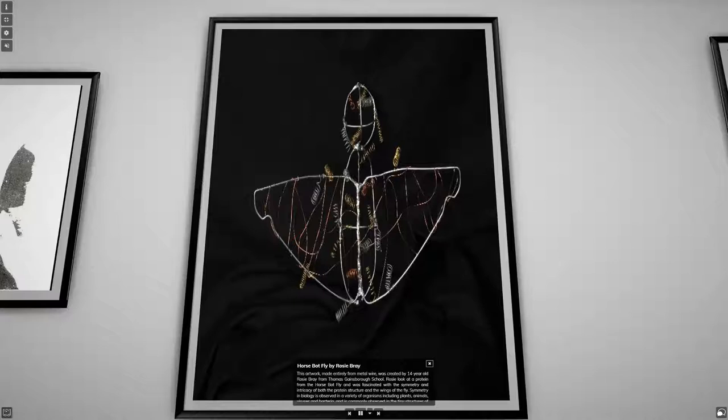This artwork, made entirely from metal wire, was created by 14-year-old Rosie Bray from Thomas Gainsborough School. Rosie looked at a protein from the horse-spot fly and was fascinated with the symmetry and intricacy of both the protein structure and the wings of the fly.